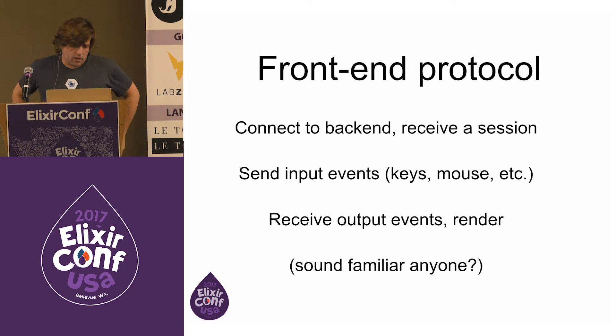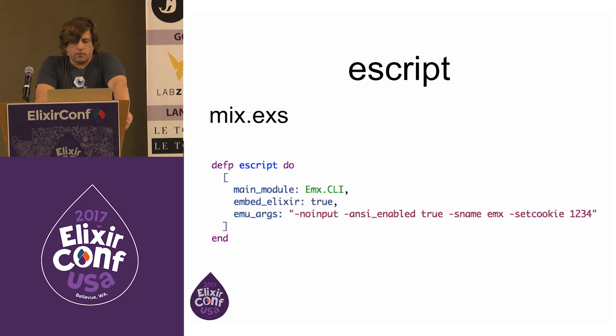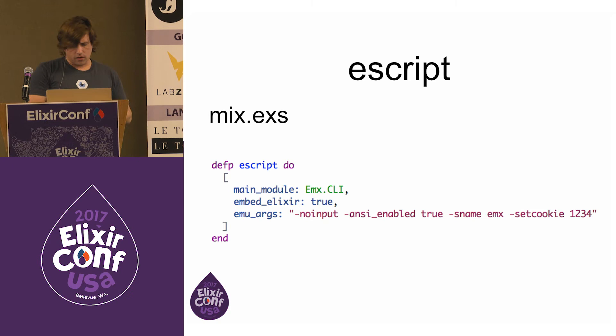The front-end protocol for speaking to the back end is: connect to the back end, receive a session, send input events, receive output events, and display them. The first thing I tried was eScript. Normally when you start up the Erlang VM it owns the terminal, but there's a way to turn that off. You can open up a port with the magic incantation TTYSL — turning off canonical mode (buffering) and turning off echoing. This means it sends you a key every time you hit something and you decide: do I want to go up, insert something, or do something else?